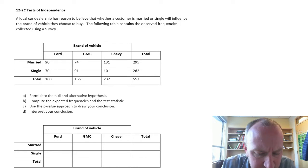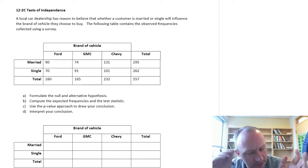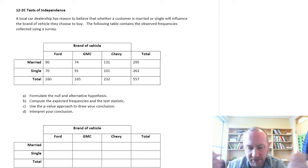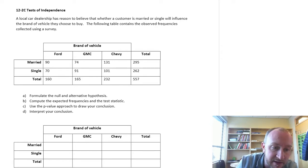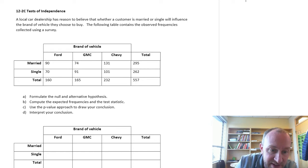We have the brand of vehicle and marital status. So the dealership has reason to believe that whether a customer is married or single will influence the brand of vehicle they want to buy. So let's see, do we have evidence here to show that these two variables, marital status and brand of vehicle, are they independent or not?